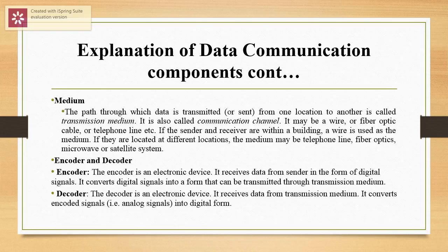Lastly, we have encoder and decoder. The encoder is an electronic device that receives data from the sender in the form of digital signals and converts digital signals into a form that can be transmitted through transmission media. A decoder is also an electronic device that receives data from transmission media and converts encoded signals, that is analog signals, into digital form.